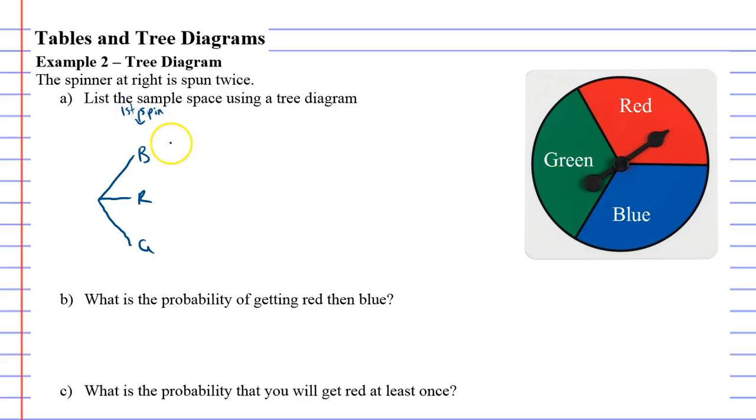Now we're going to spin it twice, so the second time we spin it, we have three branches again but this time coming from each color. So we're going to have blue, red, green; blue, red, green; blue, red, green. This column here represents the second spin.